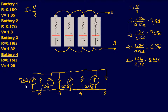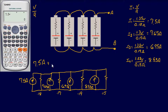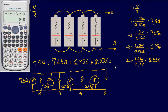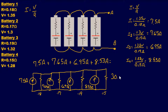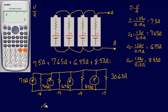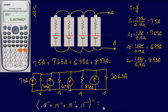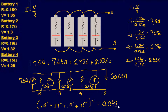Adding all the currents: 7.5 plus 7.65 plus 6.95 plus 8.53 amps gives us a total current of 30.63 amps. For the total internal resistance, since all resistors are in parallel, we compute: 0.18⁻¹ plus 0.17⁻¹ plus 0.19⁻¹ plus 0.15⁻¹, then take the reciprocal of the whole thing, which gives us 0.043 ohms — or 43 milliohms.